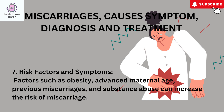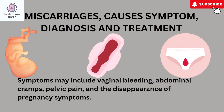Risk Factors and Symptoms. Factors such as obesity, advanced maternal age, previous miscarriages, and substance abuse can increase the risk of miscarriage. Symptoms may include vaginal bleeding, abdominal cramps, pelvic pain, and the disappearance of pregnancy symptoms.